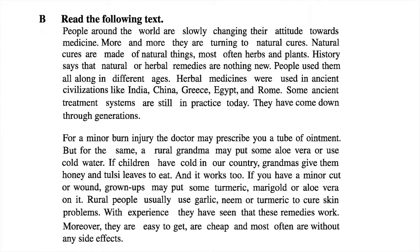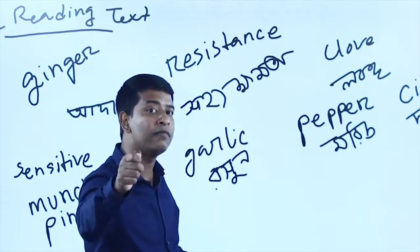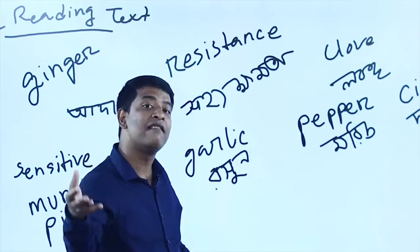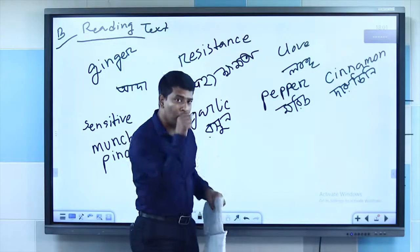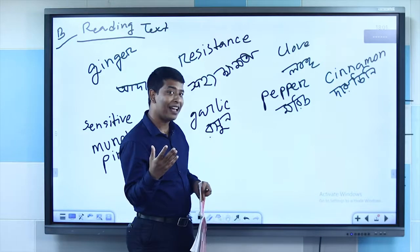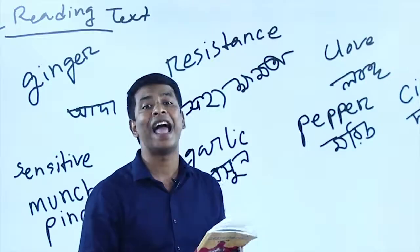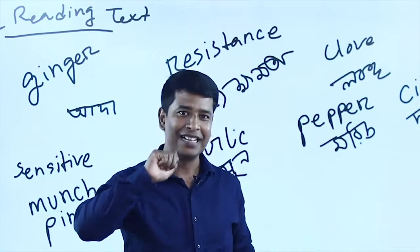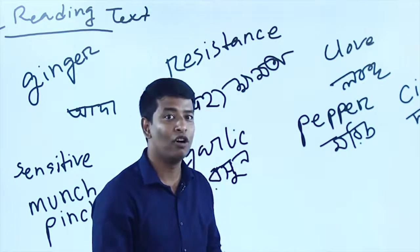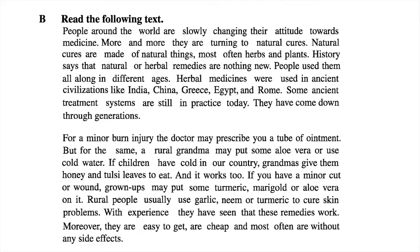But for the same injury, a rural grandma may put some aloe vera or use cold water. When you go to the doctor, the doctor prescribes you a tube of ointment, but your grandma recommends using aloe vera on the skin injury. If children have a cold, grandma gives them honey and tulsi leaves — making a juice with tulsi and honey, mixing and drinking. It's very helpful to cure your cold and it works.